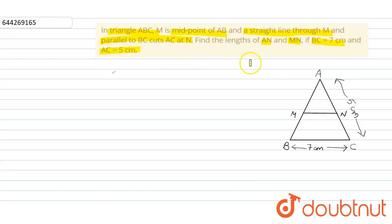Now this is our figure for this question. Triangle ABC, M is the midpoint. A line is drawn through M which cuts AC, which means N is also a midpoint of AC. AC is given to us as 5 centimeters and BC is given as 7 centimeters. Let us start solving this.